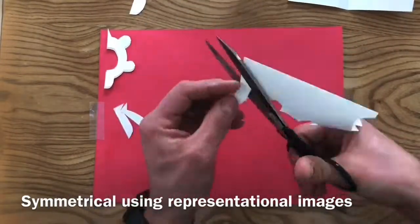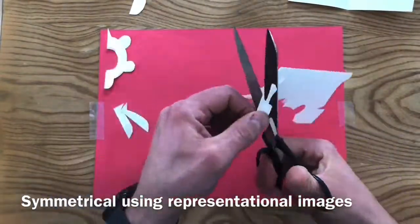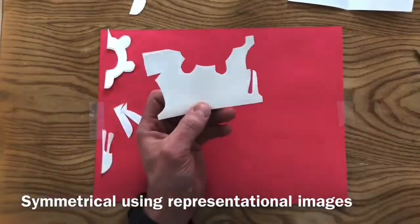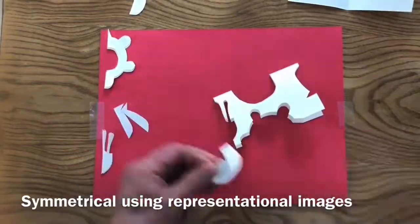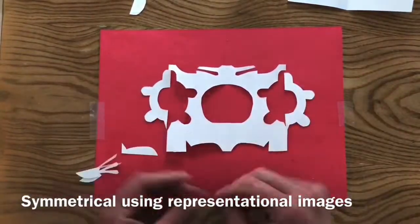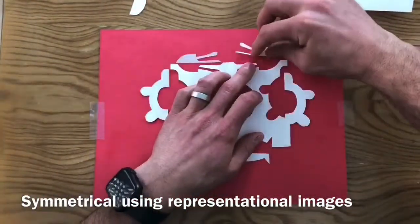For the second notan, I want you to create something that is representational or realistic in reality. In other words, choose objects, animals, plants, or something that's identifiable to create.